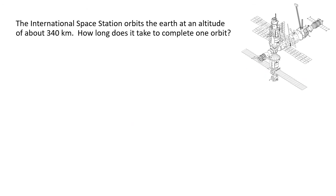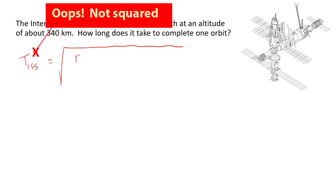Final problem: how long does the International Space Station take to complete one orbit around the Earth, given that it orbits at an altitude of about 340 kilometres? Using Kepler's law, the ISS's period squared equals the square root of the ISS's orbital radius cubed times another Earth satellite's period squared, divided by that satellite's orbital radius cubed. We need the period and orbital radius of any other Earth-orbiting object — let's use the Moon.